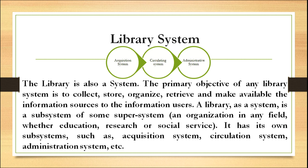The primary objective of any library system is to collect, store, organize, retrieve and make available the information sources to the information users. A library as a system is a subsystem of some super system like an organization in any field — whether education, research or social services. It has its own subsystems such as acquisition system, circulation system, administration system, etc.